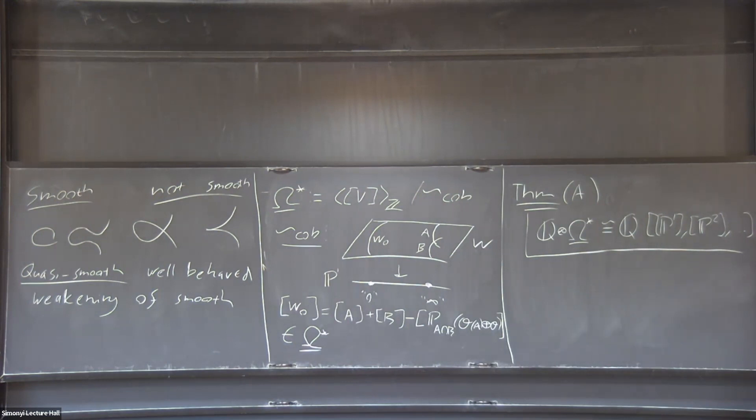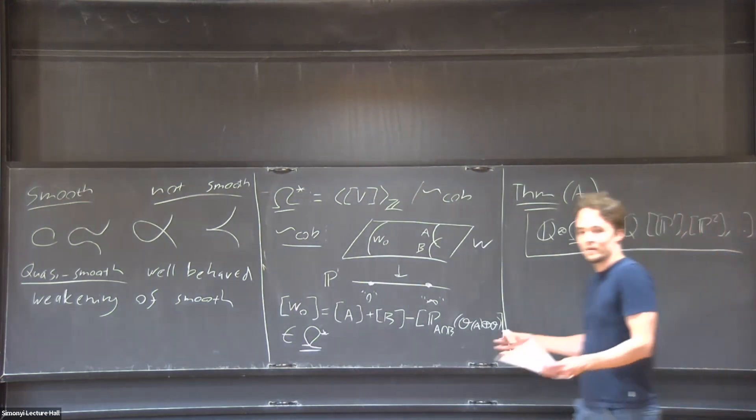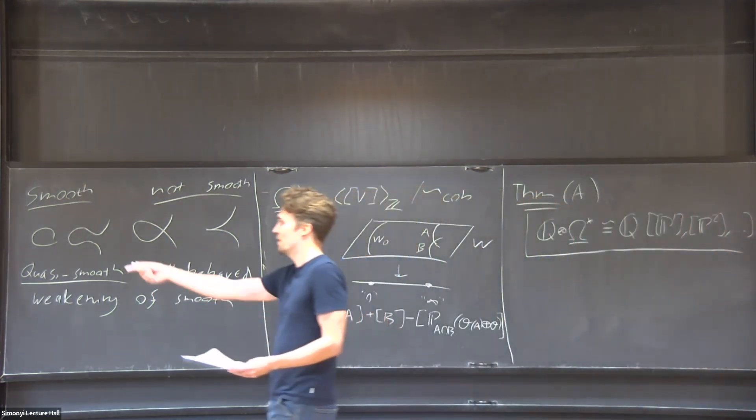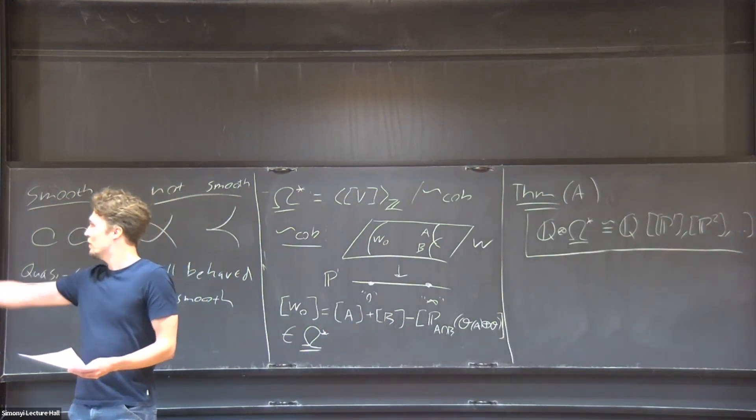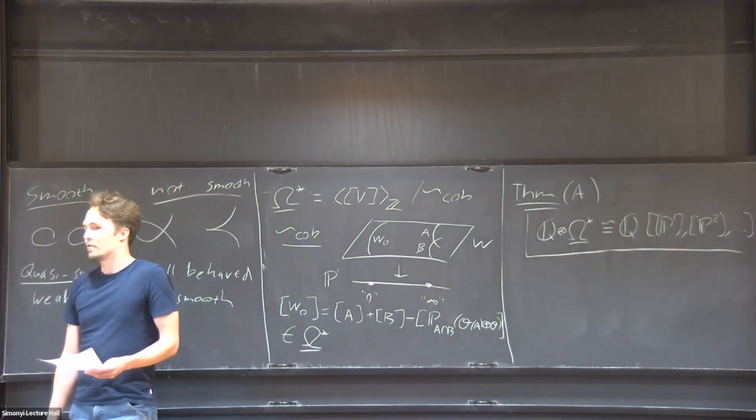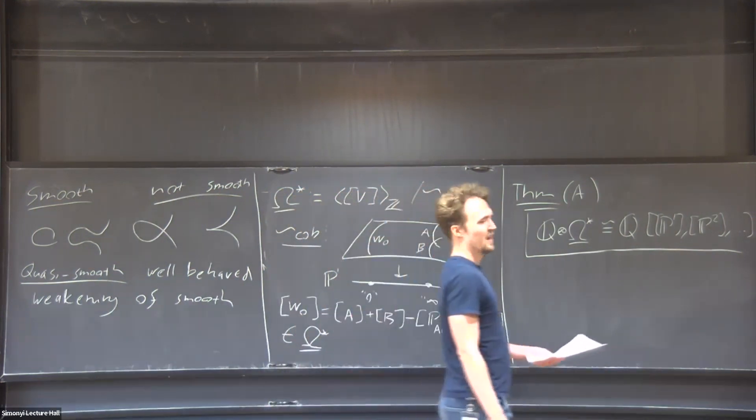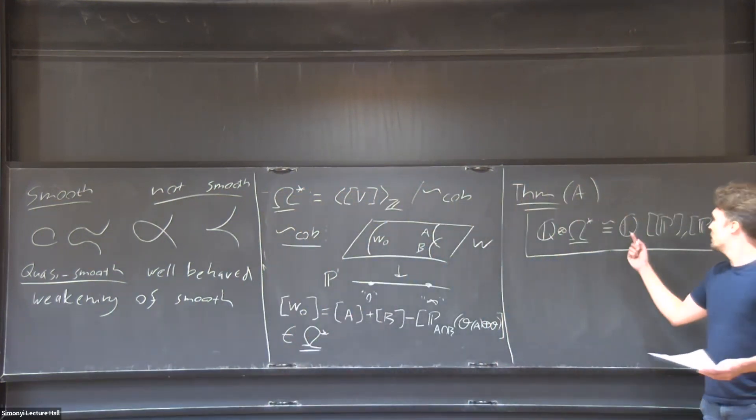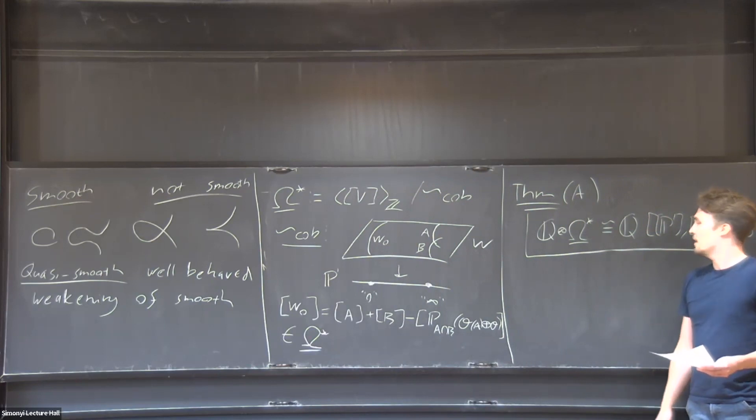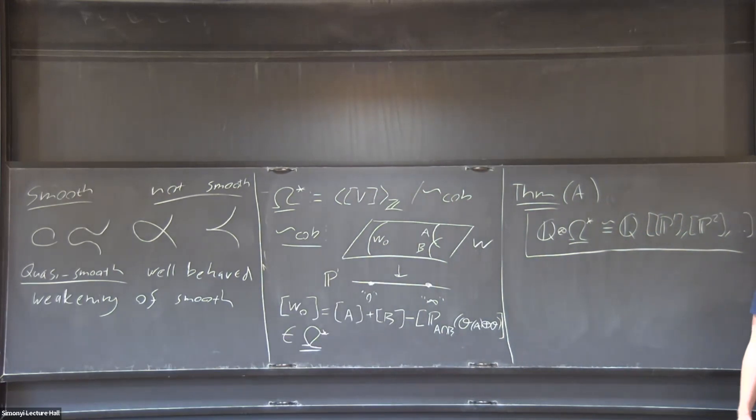Just a quick remark for algebraic geometers: this is even more general. You don't have to work over a field; you can work over a Noetherian scheme of finite Krull dimension with an ample line bundle. Then just replace Q here with the theory with rational coefficients.